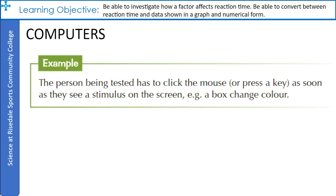Simple computer tests can also be used to measure reaction time — for example, a person being asked to click a mouse or press a key as soon as they see a stimulus on the screen, like a box changing color. Computers can give more precise reaction times because they remove the possibility of human error, recording the reaction time in milliseconds. Using a computer can also remove the possibility that the person can predict when to respond, since with the ruler test the catcher may learn to anticipate the drop by reading the tester's body language.